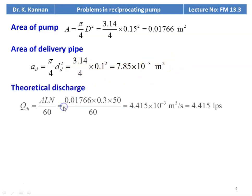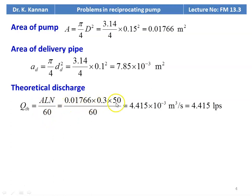Theoretical discharge Q_theoretical = A×L×N/60 = 0.01766 × 0.3 × 50/60 = 4.415×10⁻³ m³/s, or 4.415 liters per second.